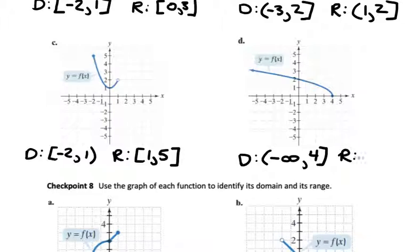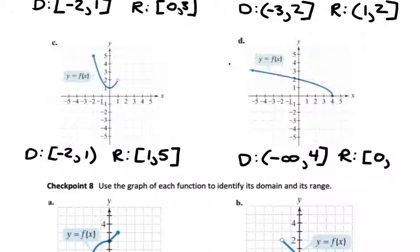For the range of part D, the smallest y value is 0 — there are no y values in the negatives on this graph — and since it's a solid circle, 0 is included. For the largest value, the arrow means the graph keeps going with no upper limit on how big the y values can get. So the upper value for the range is infinity, and since it's infinity, we always use parentheses. The range is: square bracket, 0, comma, infinity, parenthesis.